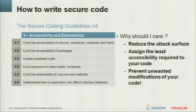Now: object construction, class models, extensibility, and accessibility. Why? To reduce the attack surface, assign the least accessibility required to your code — least privileges. That prevents unwanted modifications. Limit the accessibility of classes, methods, interfaces, and fields. Limit the accessibility of packages. Isolate unrelated code. Limit exposure of class loader instances. Limit the extensibility of classes and methods. And understand how a superclass can affect subclass behavior.